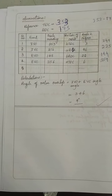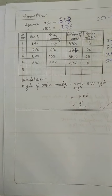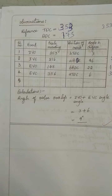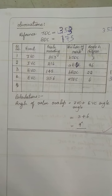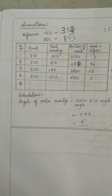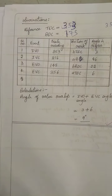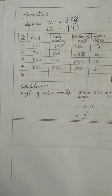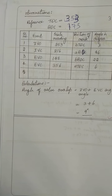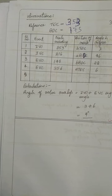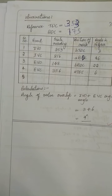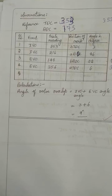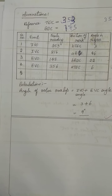This is the valve timing diagram. Here you have different notations: IVO is inlet valve opening, which happens before TDC — that is Before Top Dead Center, the topmost position of the piston. IVC represents inlet valve closing, which is after Bottom Dead Center — the bottommost position of the piston. EVO is exhaust valve opening, which happens before BDC. EVC represents exhaust valve closing, which happens after TDC.